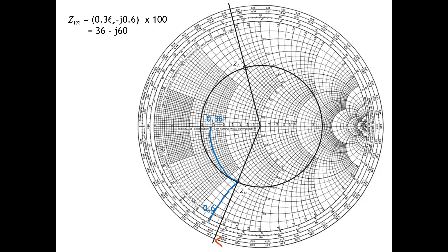This result of 36-j60 Ω is quite close to the calculated value of 36.56-j61.16 Ω, which confirms that both methods are reasonably accurate. In this video, I have calculated and verified the solutions using both calculation and Smith chart, and concluded that the values are not far off from each other. Please like and subscribe — thank you so much for your strong support, and I hope to see you soon. Bye for now.